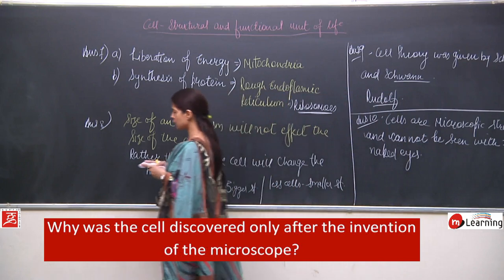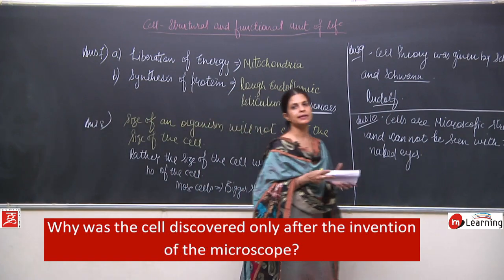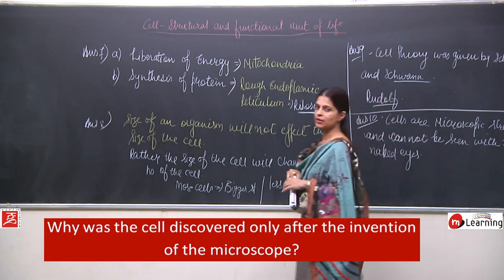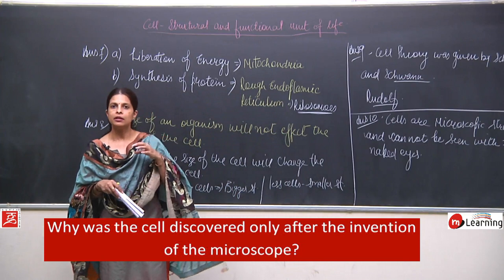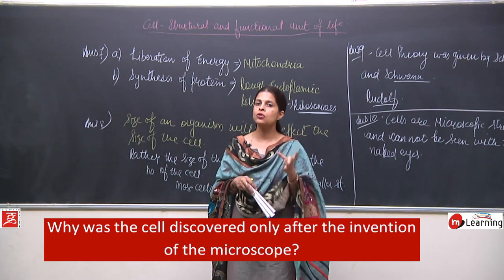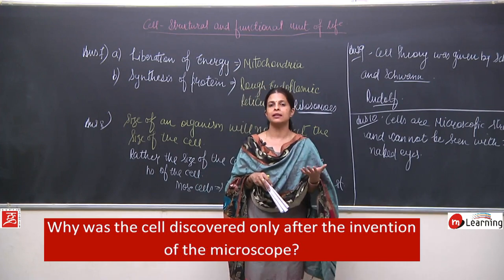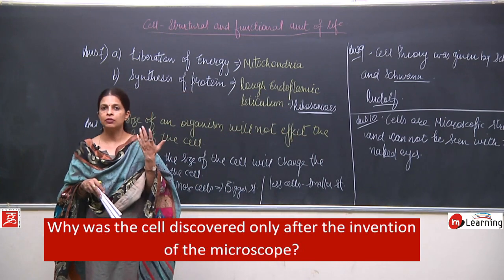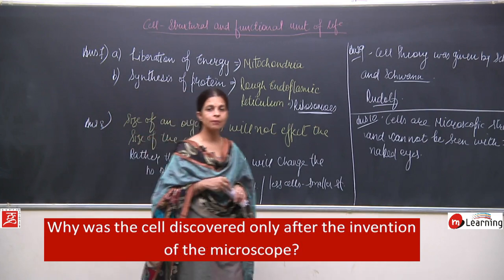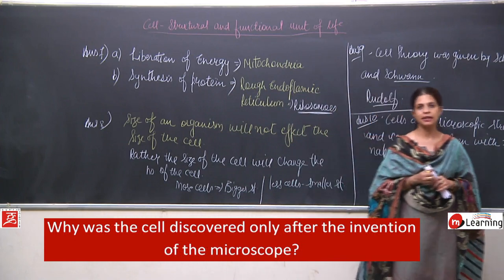Question number 11: Cell is a structural and functional unit of life — but what happens when the cell dies? A cell is a living structure. It requires everything and shows all the characteristic features of a living organism — respiration, reproduction, growth. So obviously death will also occur. When cells die, what happens? We will discuss this answer next.